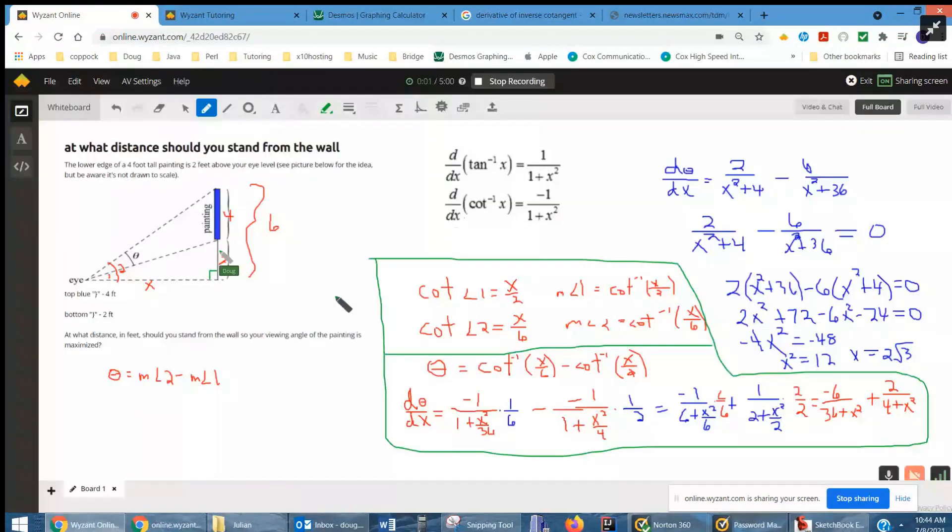Okay, the idea for this problem is to come up with a function that defines theta, this angle right here, in terms of x, the distance that the person is standing from the wall where the painting is hung.